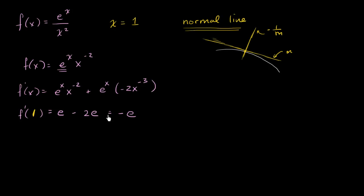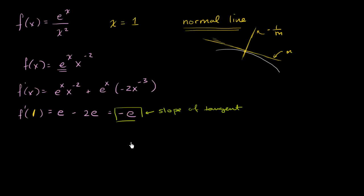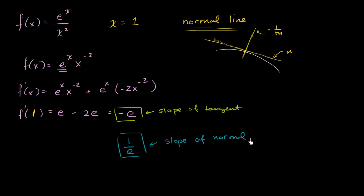So this right over here is the slope of the tangent line — the slope of the tangent is negative e. And so if we want the slope of the normal line, we just take the negative reciprocal. The reciprocal of negative e is 1 over negative e, but the negative of that is going to be 1 over e. So 1 over e is going to be the slope of the normal line.